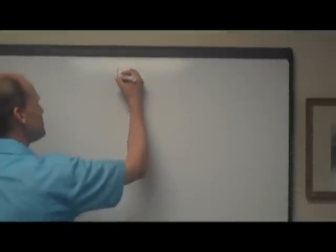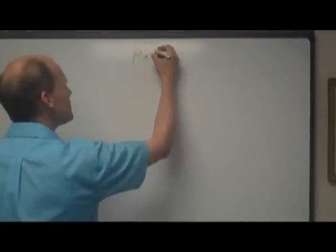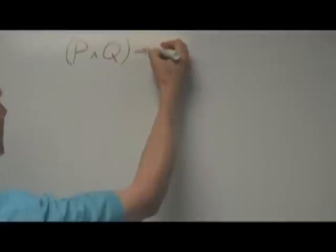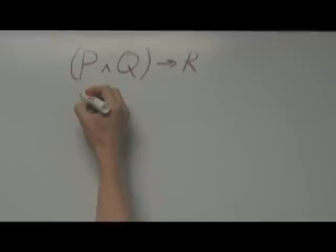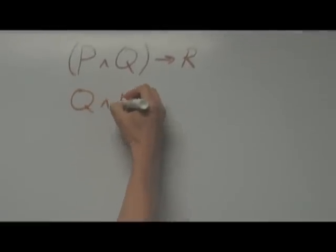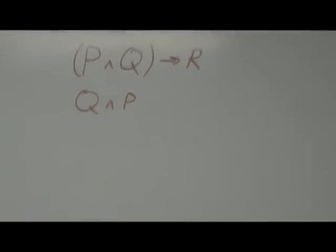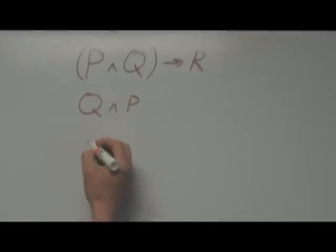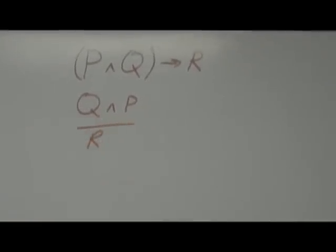All right, so we're going to show that if P and Q are true, then R is true, and that if we also have that Q and P are both true, we can then infer that R is true.